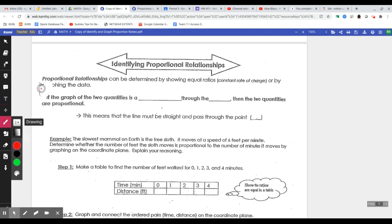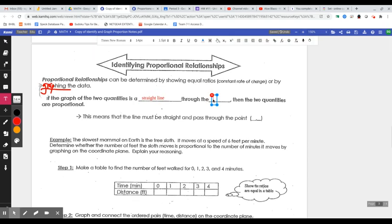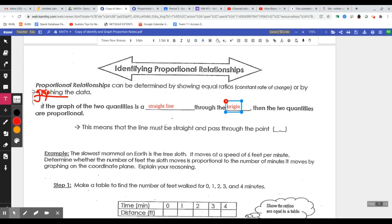Graphing the data. So if the graph of the two quantities is a straight line through the origin, then the two quantities are proportional. So a straight line through the origin, that's what you're going to have to check after you graph.